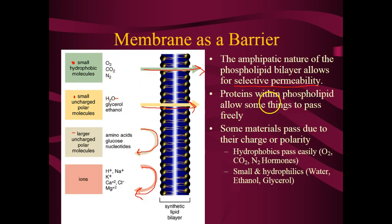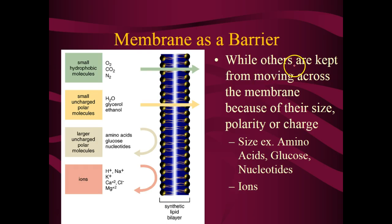Proteins within the phospholipid allow some things to pass freely, and some materials pass due to their charge or polarity — though they typically require a protein. To sum it up: while some molecules are kept from moving across the membrane based on their size, polarity, or charge, others can go through based on their size, polarity, and charge. Small, uncharged, and nonpolar molecules can go through, while large polar or charged ionic compounds cannot.